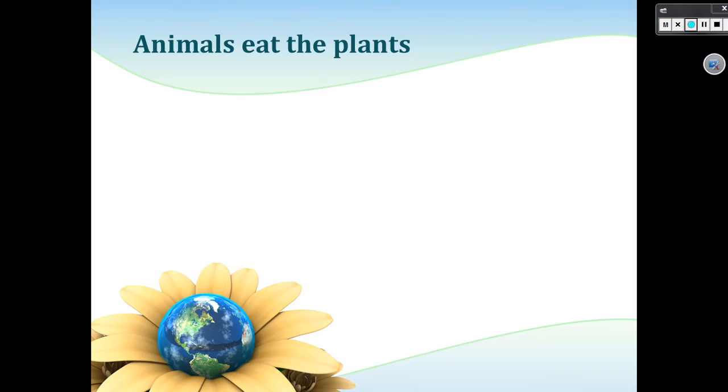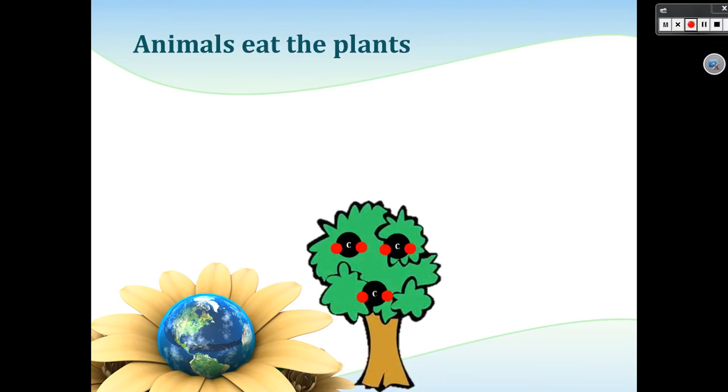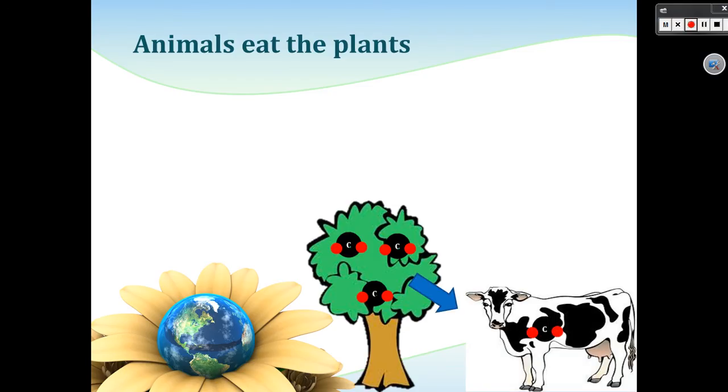Animals then feed on the plants. The carbon atoms move from the plant to the animal, and then are released into the atmosphere again through the animal's respiration.